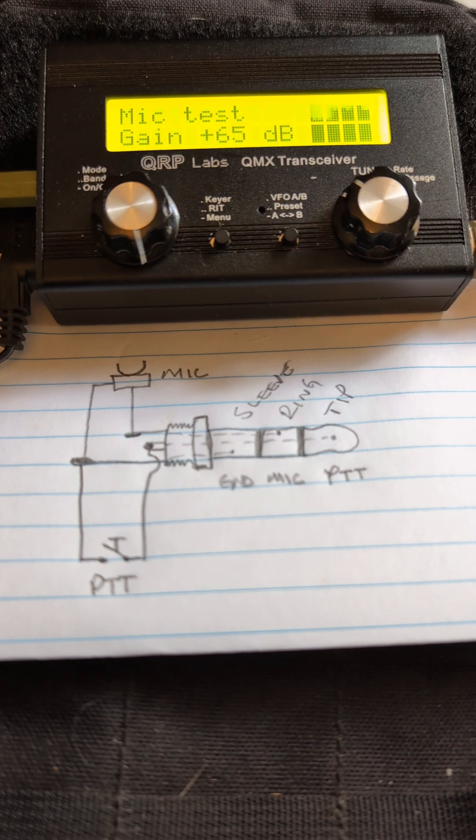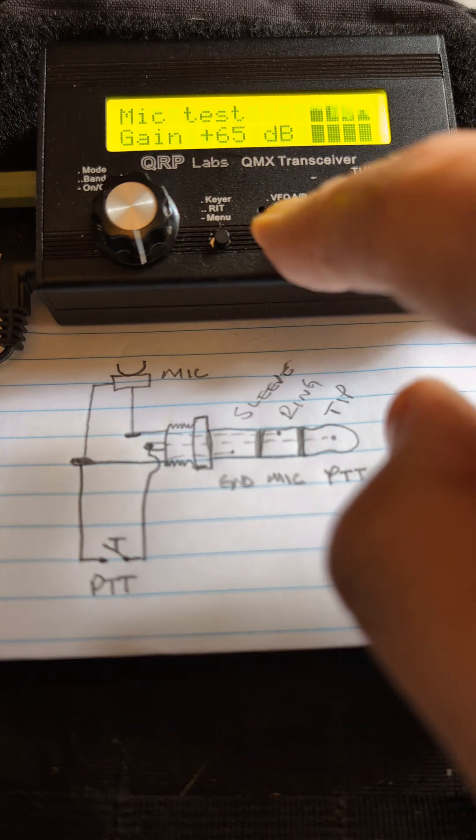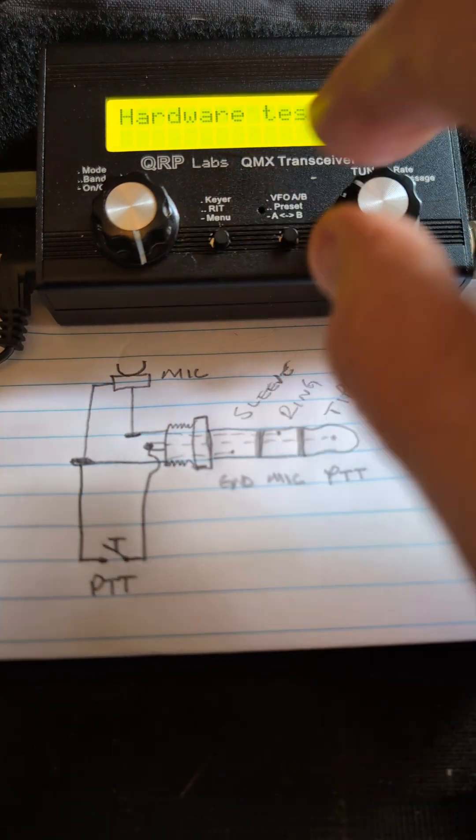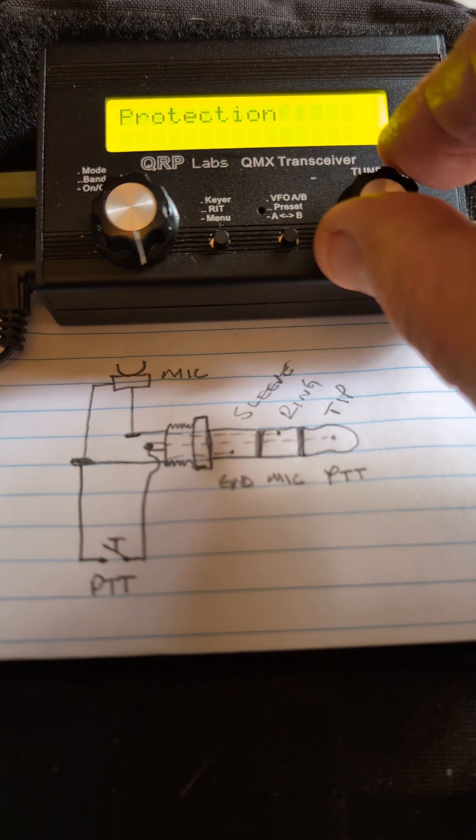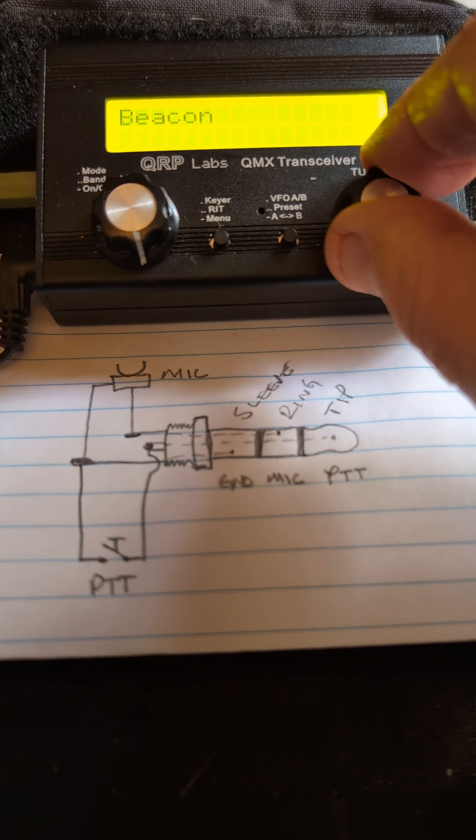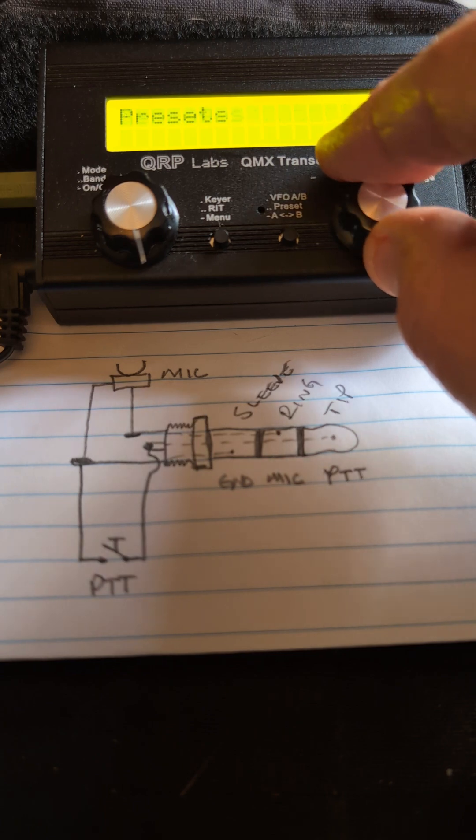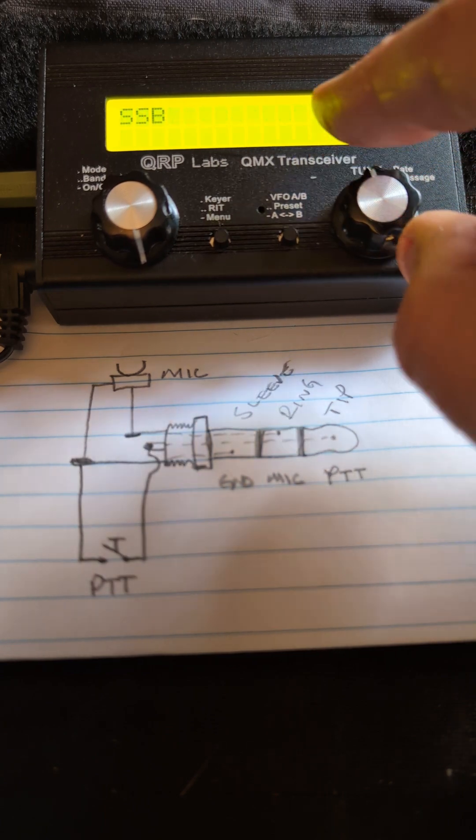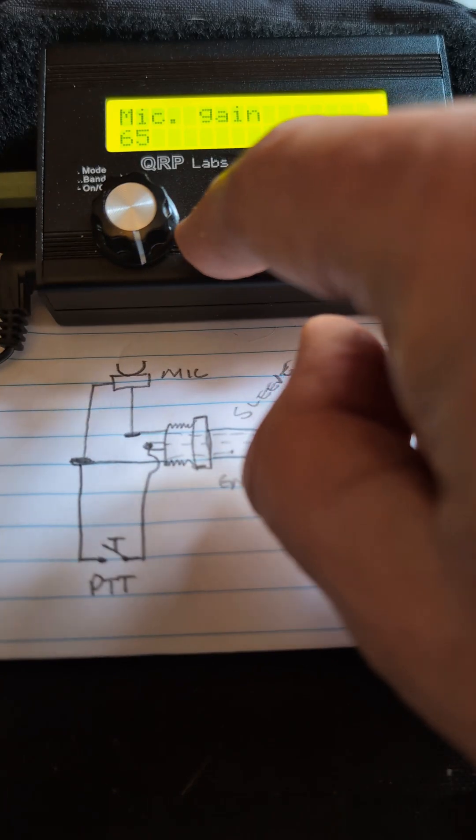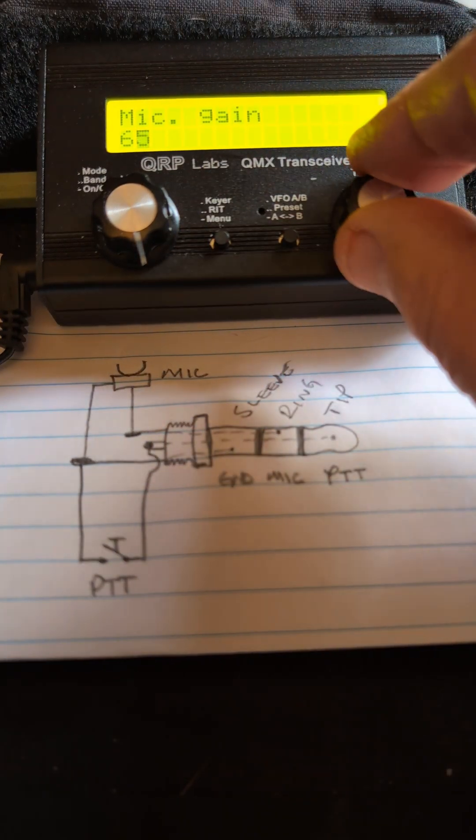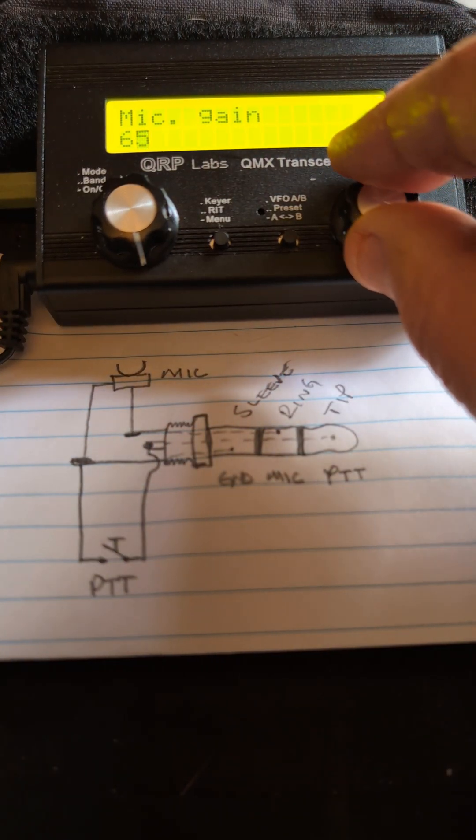How do you set the mic gain? I'm glad you asked. Let's get out of here and go back to, I think it's sideband. There we go, sideband SSB mic gain 65. If you need to change that, you can change that up and down like that.